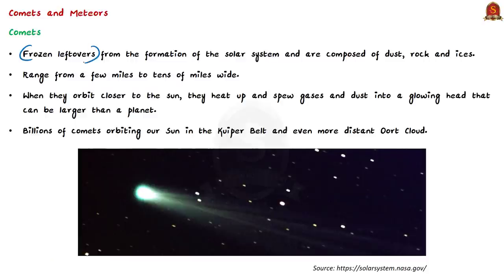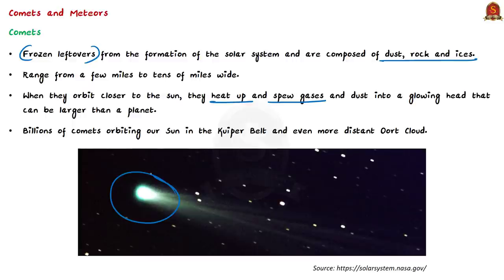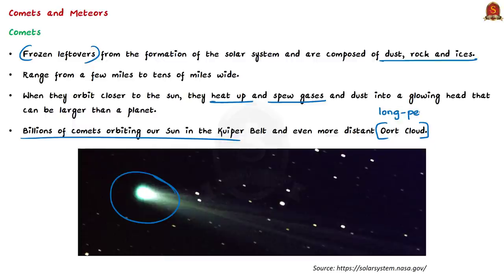Comets range from a few miles to tens of miles wide. As they orbit closer to the Sun, they heat up and spew gases and dust into a glowing head that can be larger than a planet, forming a tail that stretches millions of miles. There are likely billions of comets orbiting the Sun in the Kuiper Belt and in the distant Oort Cloud, which is the most distant region of our solar system and is suspected to be the source of most long-period comets.